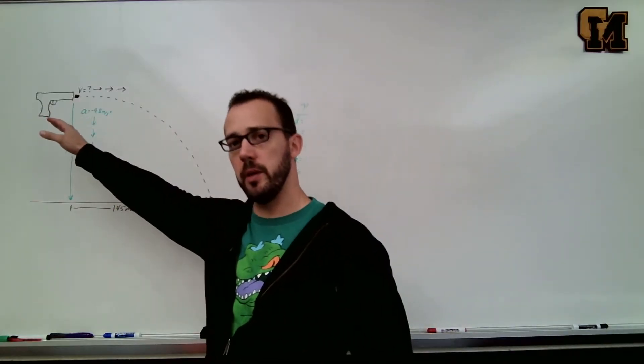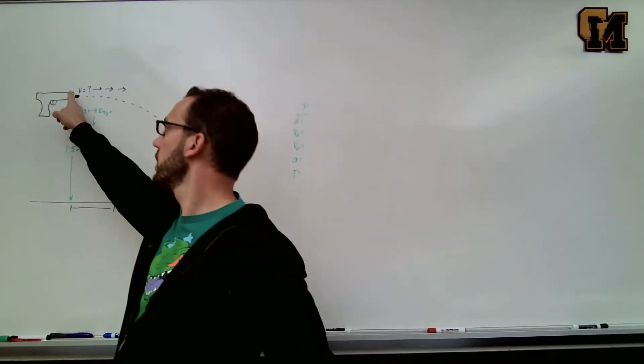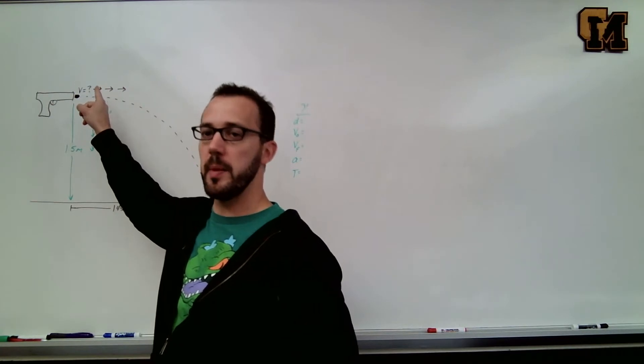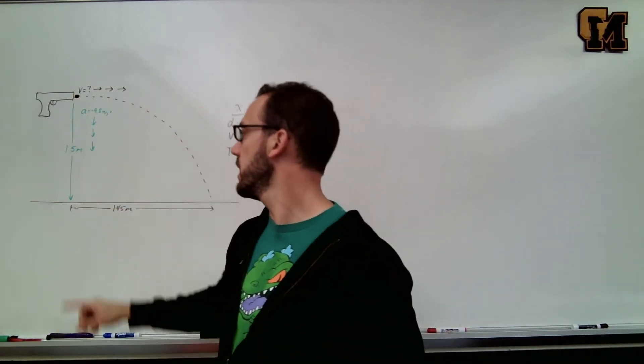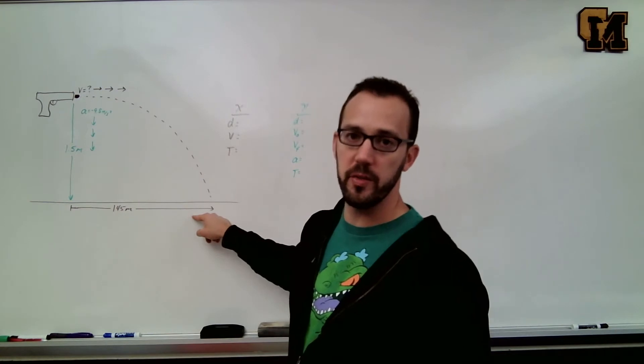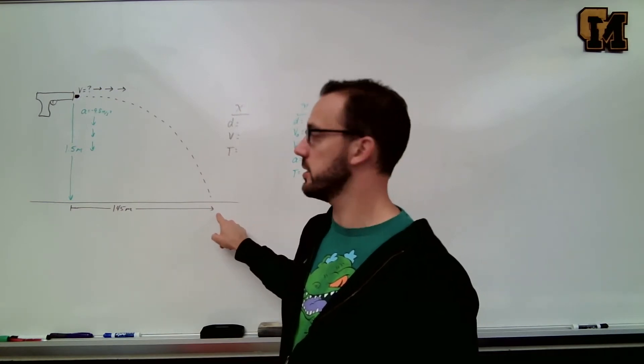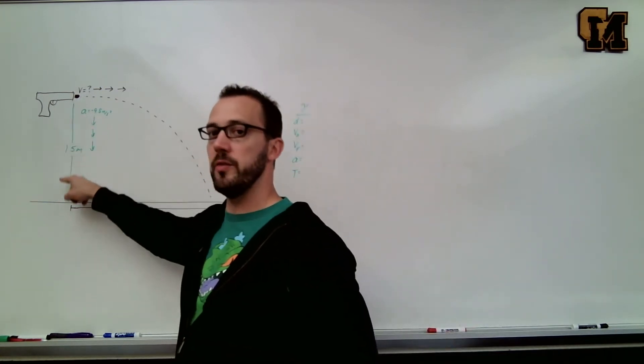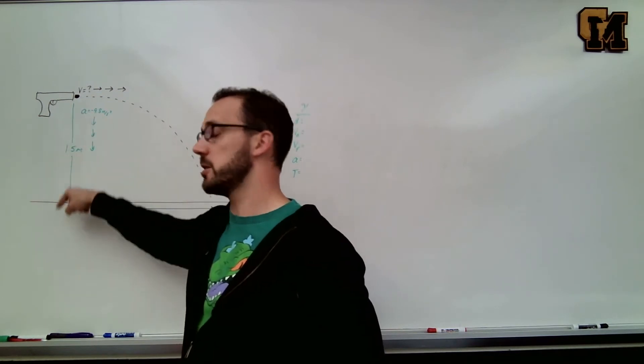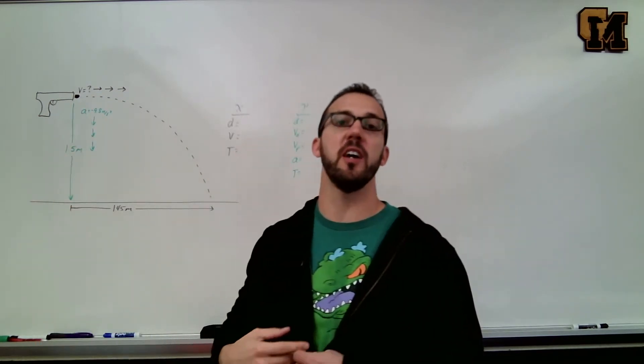Picture of our gun and bullet are up here on the board. We're trying to figure out how fast it's going to come out of the gun, so we do not know the velocity in the x direction, but we know that it lands 145 meters away when it eventually gets to the ground. We know it's 1.5 meters above the ground, so the displacement in the y direction is going to be 1.5 meters downward.